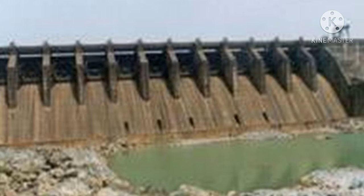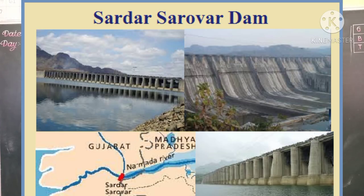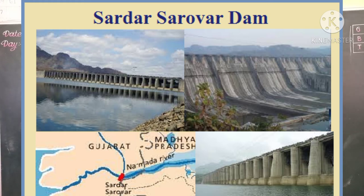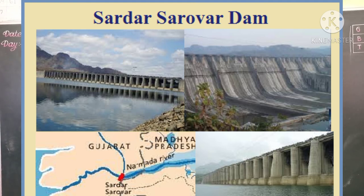I hope students you have understood about the Damodar Valley Project. Now let's see the Sardar Sarovar Dam. It is built on the river Narmada in Gujarat, and it provides water to the states of Madhya Pradesh and Gujarat.